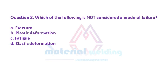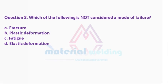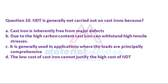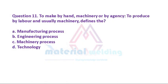Question 8: Which of the following is not considered a mode of failure? A. Fracture. B. Plastic deformation. C. Fatigue. D. Elastic deformation. Question 9: Brittle fracture is most likely to occur: A. At high temperatures. B. At low temperatures. C. Under cyclic loading. D. In a corrosive environment. Question 10: NDT is generally not carried out on cast iron because: A. Cast iron is inherently free from major defects. B. Due to the high carbon content, cast iron can withstand high tensile stresses.